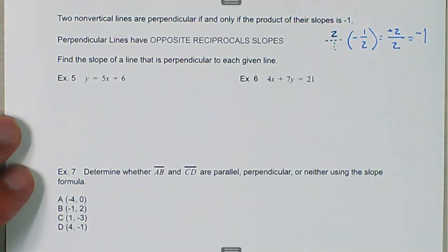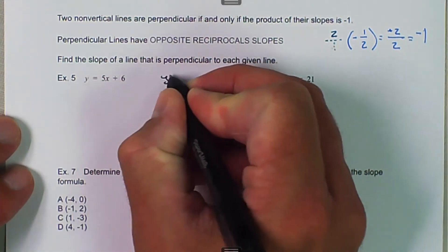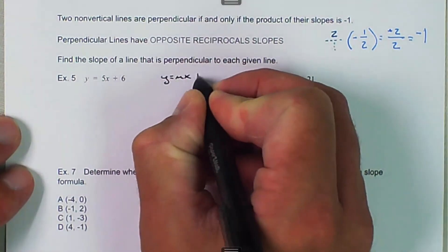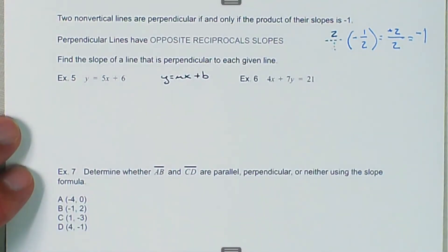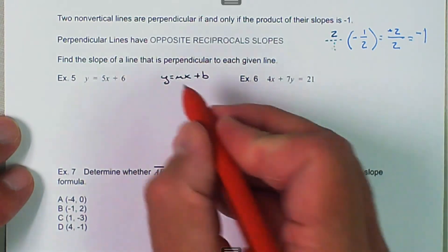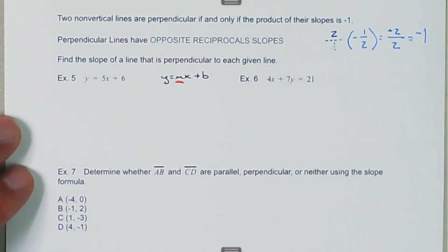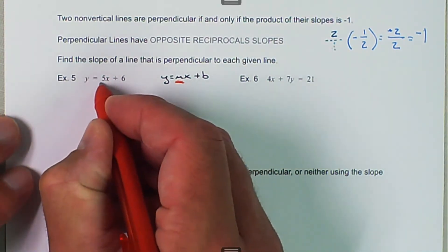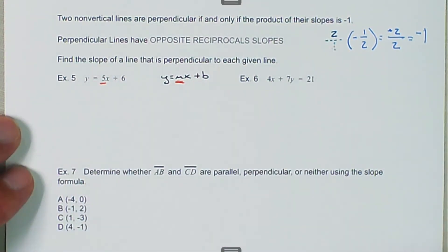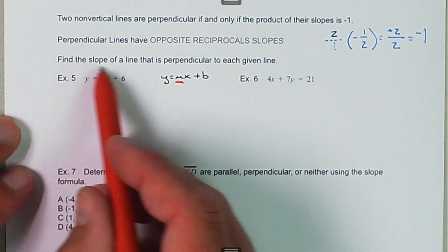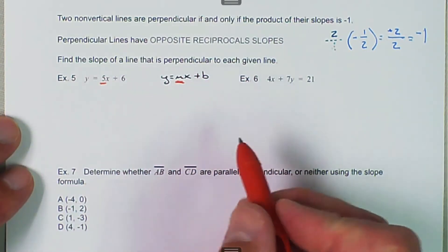So here we have y equals 5x plus 6, and remember we want to have it in y equals mx plus b, because that's the easiest to see it in. And we're looking for m, or the coefficient that is in front of the x variable. So here we have 5, and the slope of the line that is perpendicular.